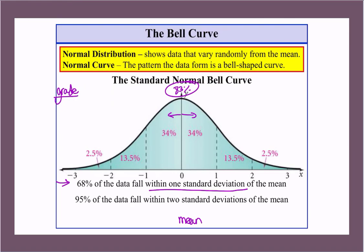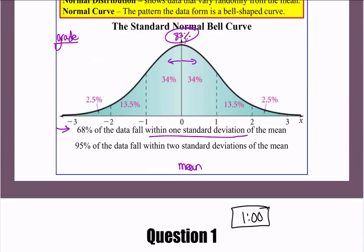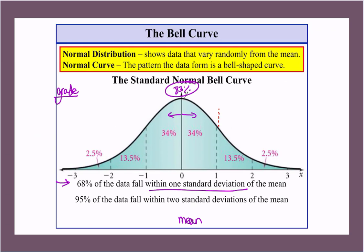And so if we go one standard deviation up or 4% up, well, then this would be 87%. And then over here, if we go down one standard deviation, this would be 79%. But collectively, so this is one standard deviation, one down, one up.